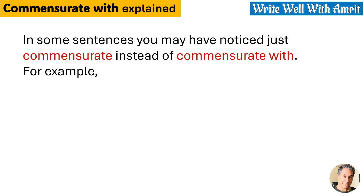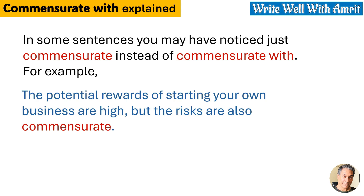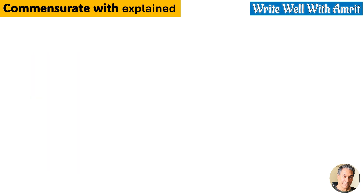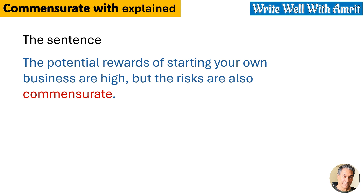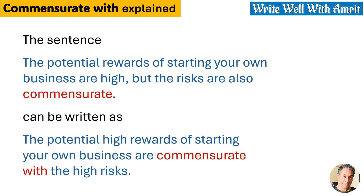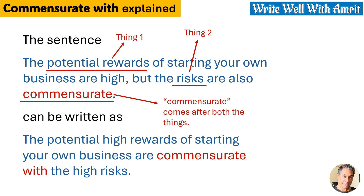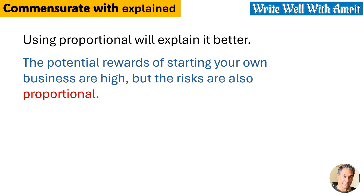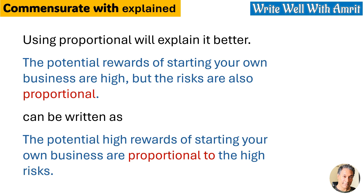In some sentences you may notice just 'commensurate' instead of 'commensurate with.' For example: 'The potential rewards of starting your own business are high, but the risks are also commensurate.' When 'commensurate' is used without 'with,' it means 'proportional.' Here, 'commensurate' comes after both things being compared. This can be rewritten as: 'The potential high rewards of starting your own business are commensurate with the high risks.' When you use 'commensurate' between two things being compared, you use 'commensurate with.' But when you have already mentioned two things and then want to use 'commensurate,' you just use it without 'with.' Using 'proportional' explains it better: 'The potential rewards are high but the risks are also proportional' can be written as 'The potential high rewards are proportional to the high risks.'